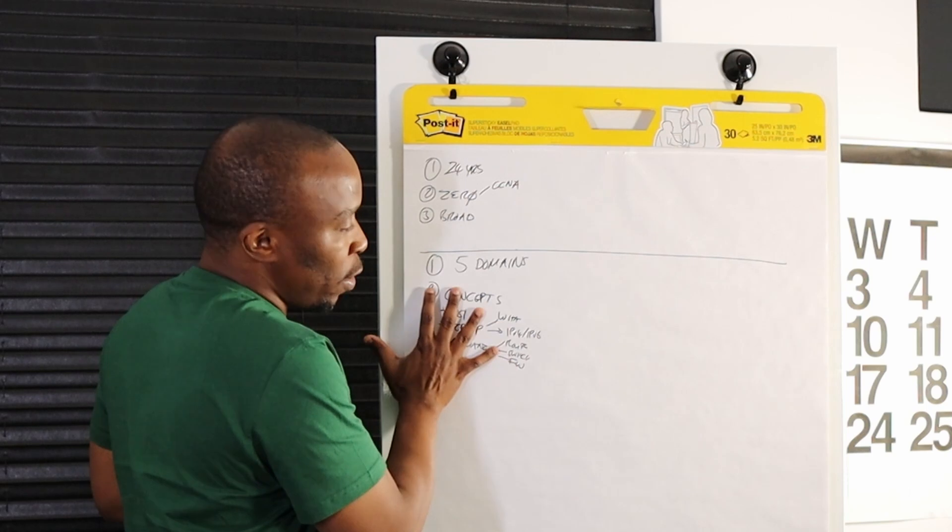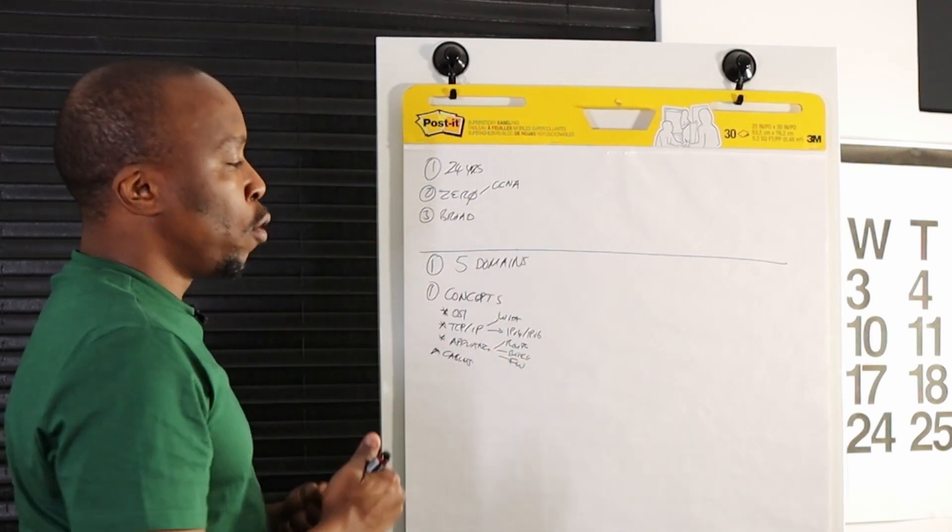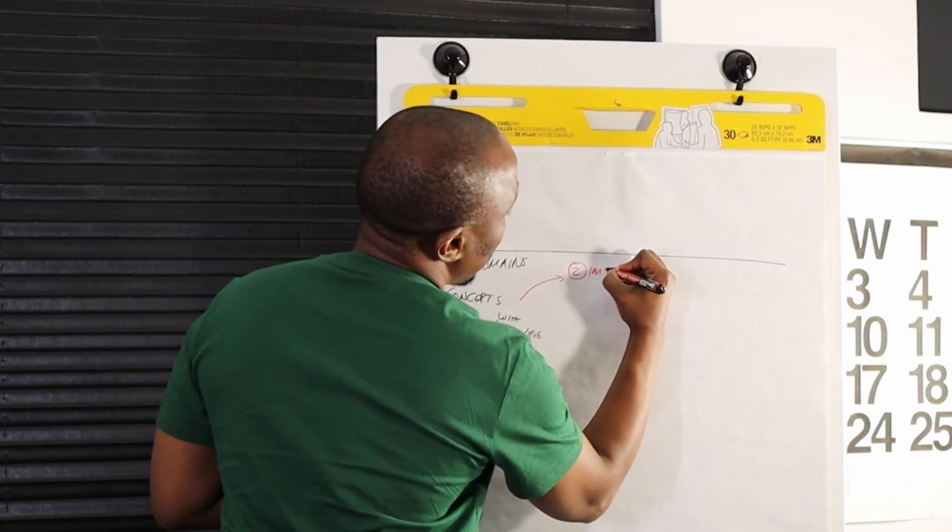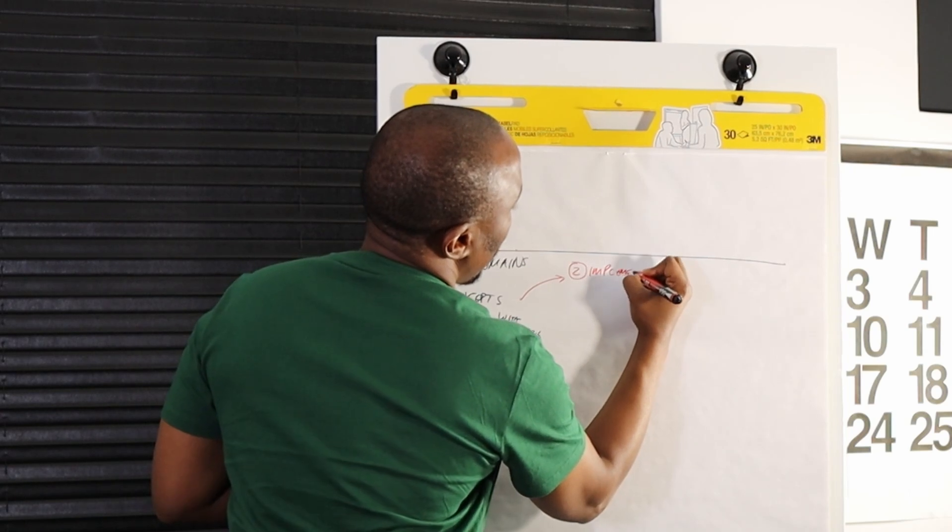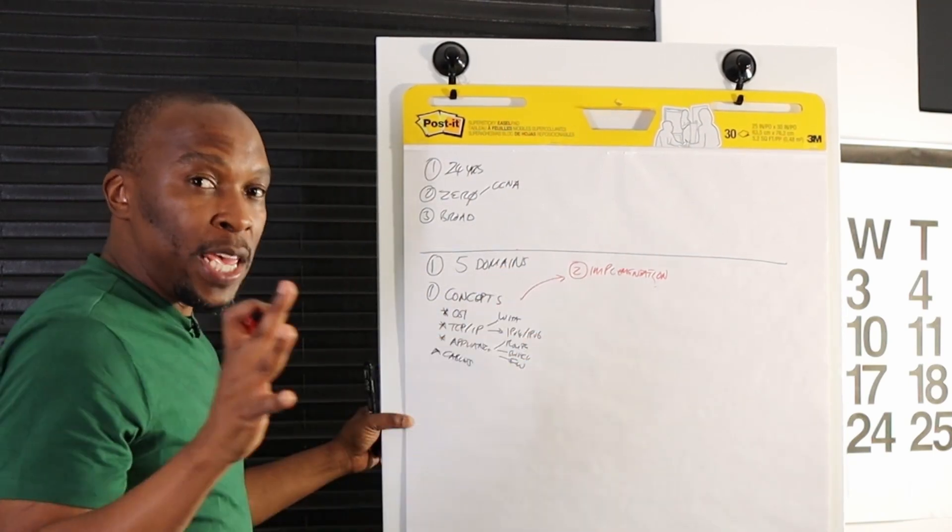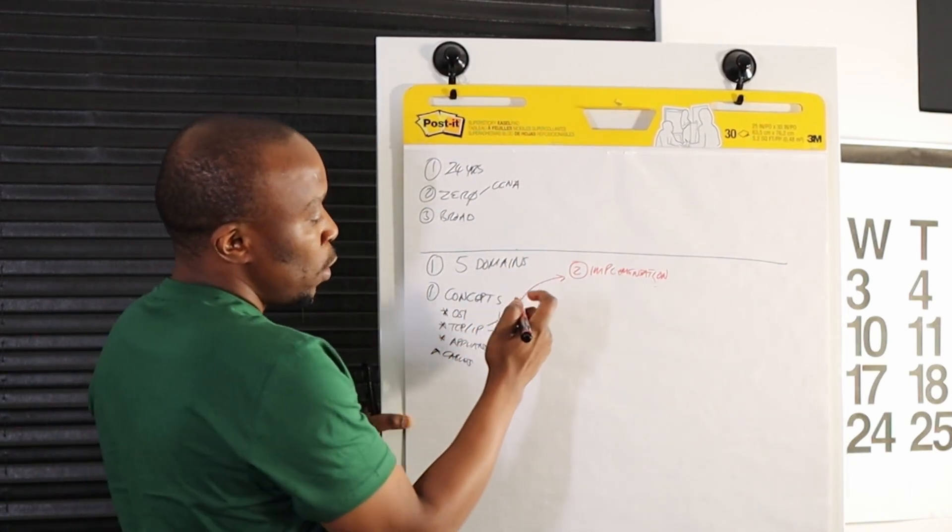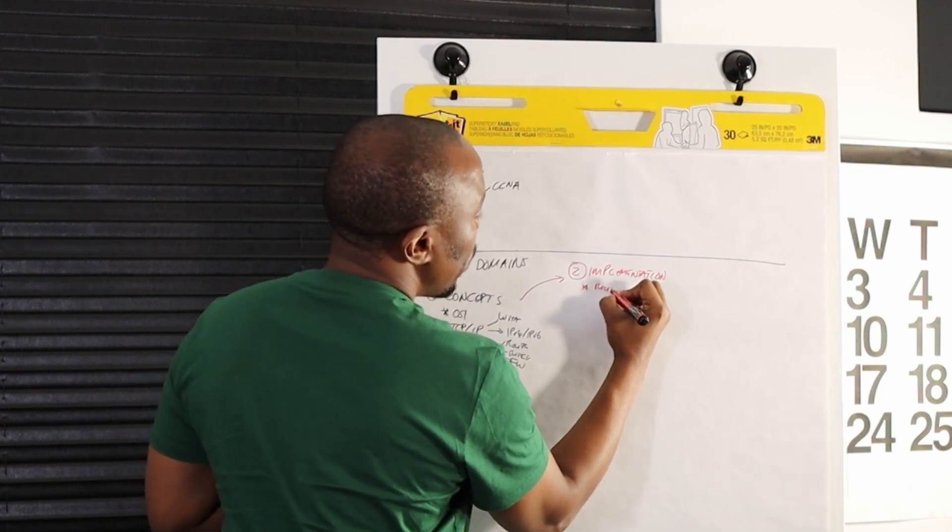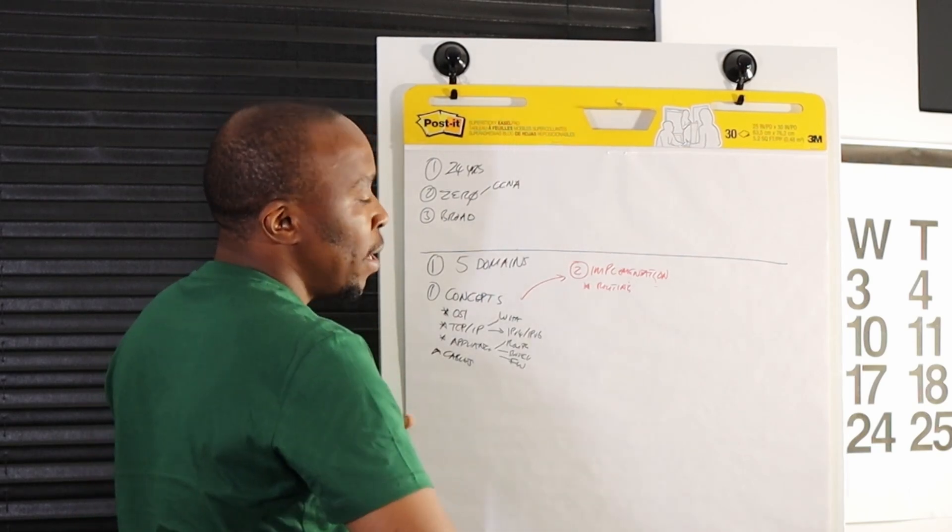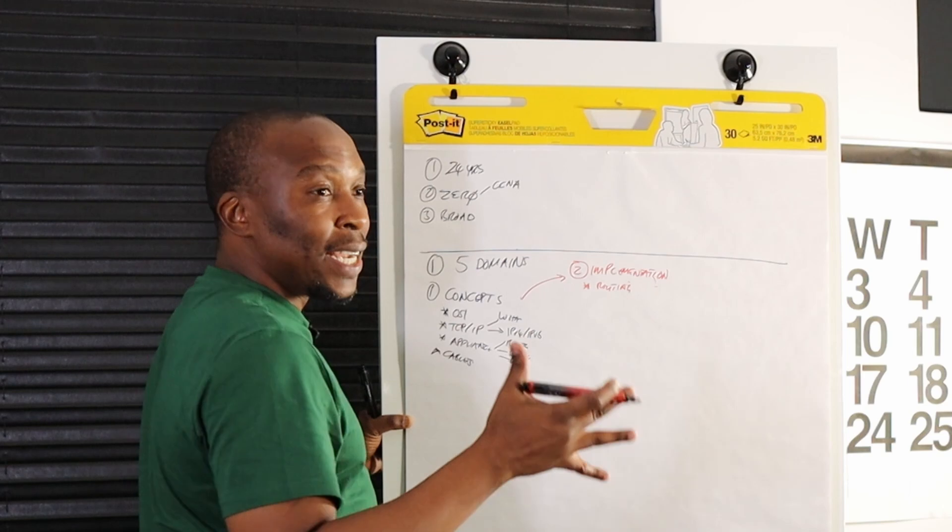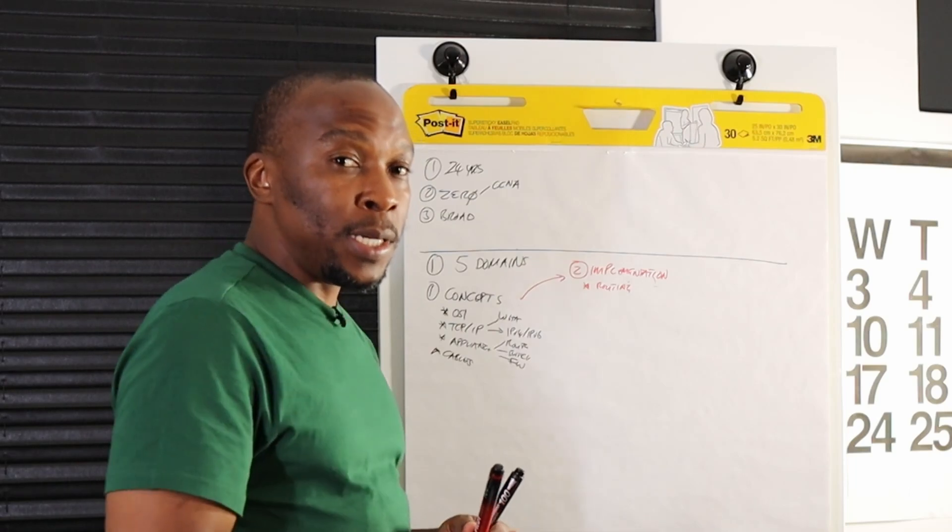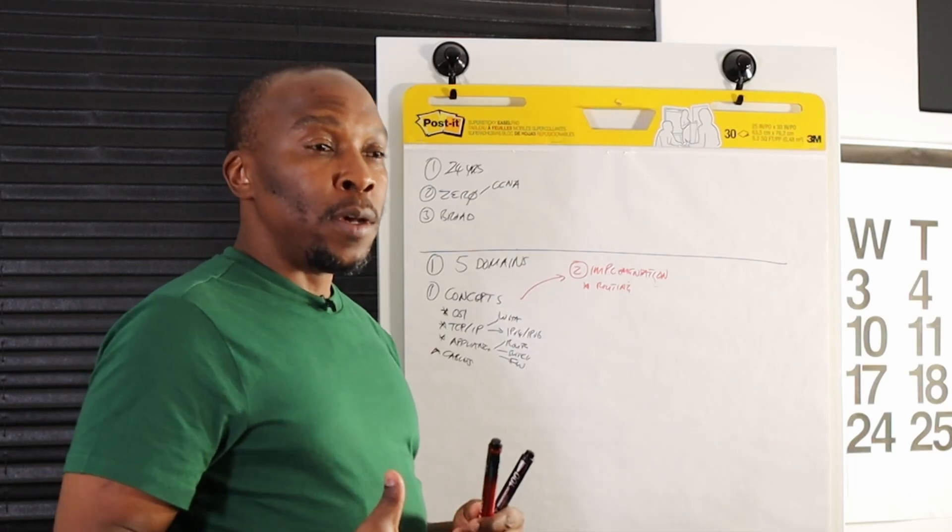When you understand the concepts, the course then goes ahead into the second domain, which looks at network implementation. There is no point for us to learn and not implement. You're going to learn about routing, how does routing work on a network. When traffic is flowing, what is the criteria that is used to route that traffic? Is it the least cost? Is it hop count? You'll learn about it.